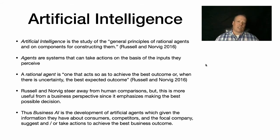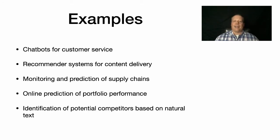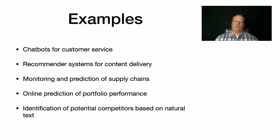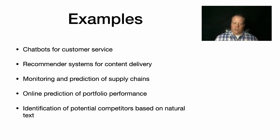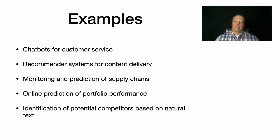In many cases in business AI, systems are not actually taking an action — they're suggesting that a human take an action on the basis of information provided to them. Some examples of AI in business would be chatbots for customer service. Nowadays, a lot of times when you first connect to a chatbot, you're actually not talking to a human. In many cases, they're trying to see if they can solve the problem without ever involving a human, because humans are expensive, or at least narrow down which human is best able to fix your problem.